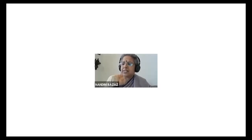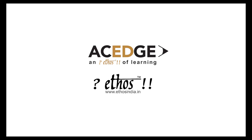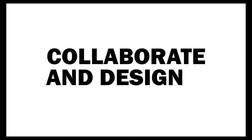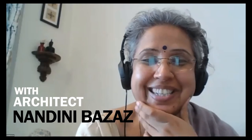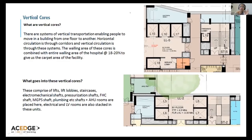Something very interesting which has come after years and years of learning and experience — we don't just randomly put vertical cores in a building. When it comes to carpet area calculations, 18 to 20% of the hospital floor area is under these walls. Including vertical cores, this entire calculation gives us the carpet area from the built-up area — what we reduce from the gross construction area to get the carpet area.